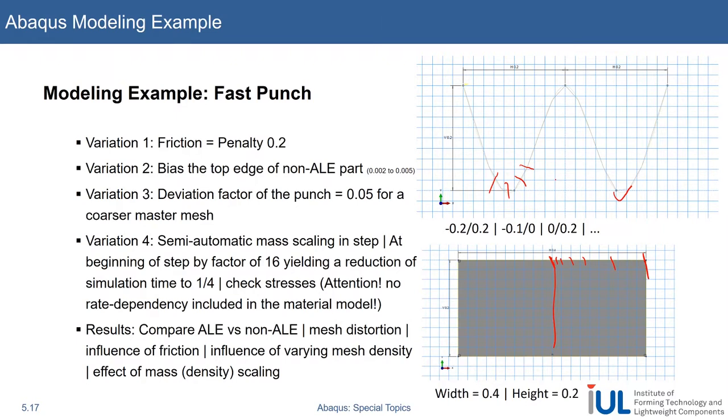What's the effect of mass density scaling or just mass scaling? What if you go up to a thousand? Your simulation should be done in a couple of minutes, but how do your results look? We'll compare the two sides, ALE versus non-ALE, and look at especially how the mesh behaves around this contact. Okay, see you on the other side.